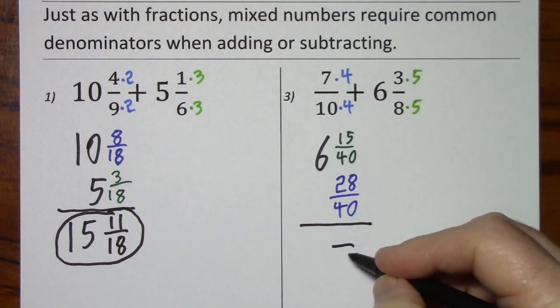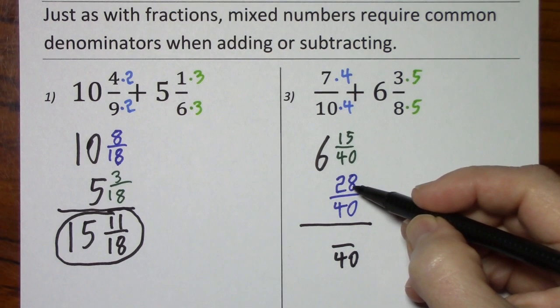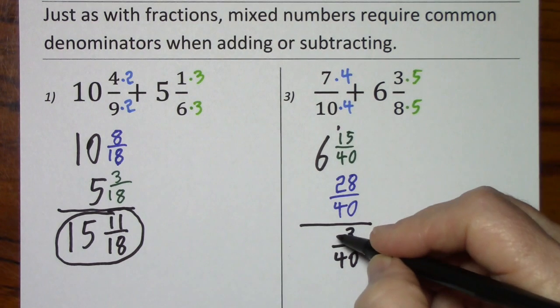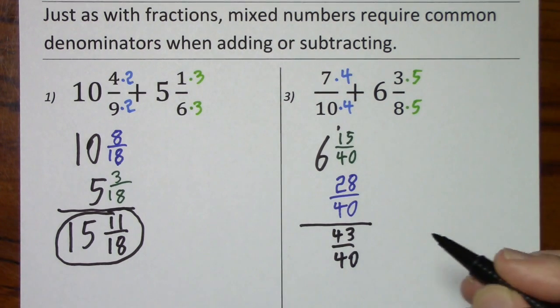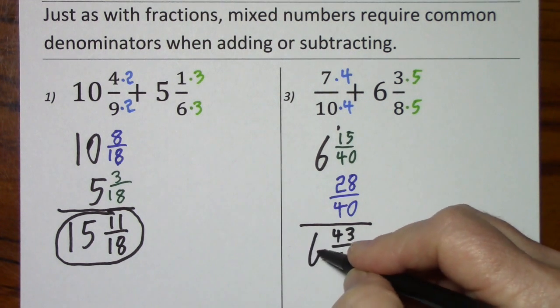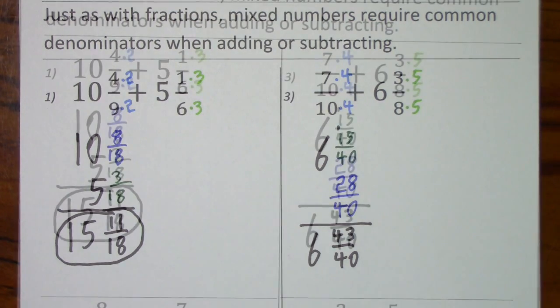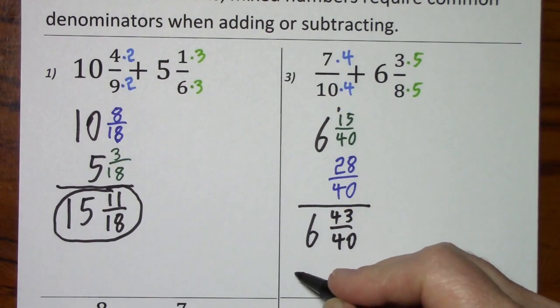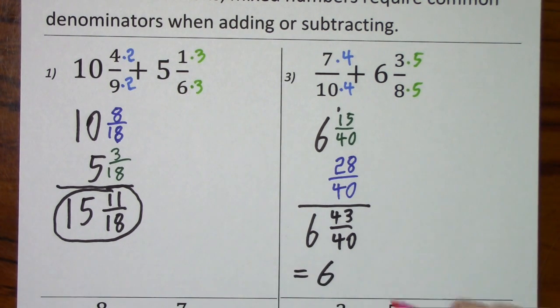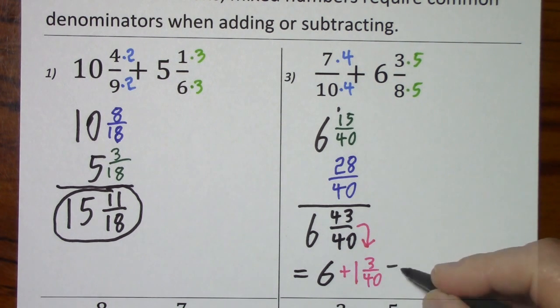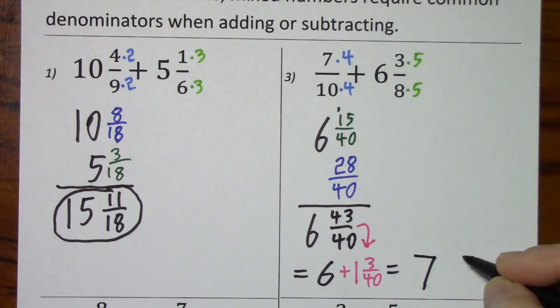2 and 7 tenths becomes 2 and 28 fortieths. We're certainly going to keep our 40. And then 15 and 28, carry that one, 43. The 6 just comes down. We can't leave it in this form because 43 fortieths is 1 and 3 fortieths. So, what we actually have here is 6 plus 1 and 3 fortieths, which gives us 7 and 3 fortieths for a final answer.